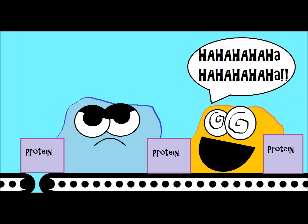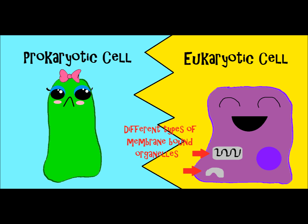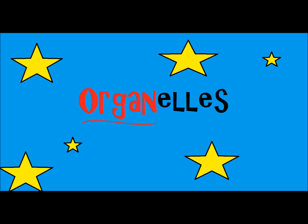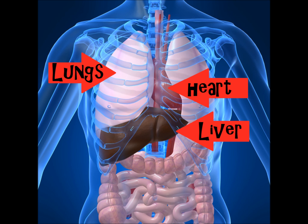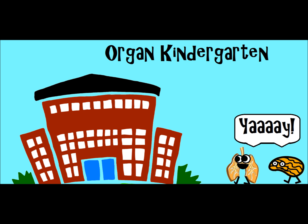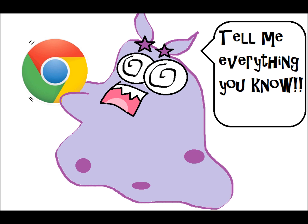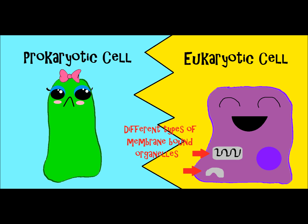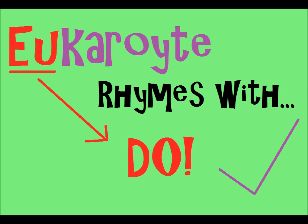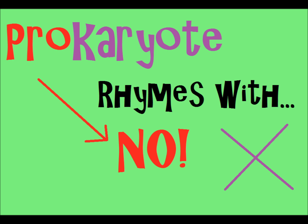Now, one major difference between prokaryotes and eukaryotes is that eukaryotes have something called membrane-bound organelles. I like to think of the word organelle like the word organ — you know how you have organs in your body, like a heart, liver, and lungs? An organelle is kind of like little organs. Prokaryotes do not have membrane-bound organelles. One way I like to help students remember this: eukaryote — the U rhymes with 'do,' so they do have membrane-bound organelles. And prokaryote — the 'pro' rhymes with 'no,' so they do not have membrane-bound organelles.